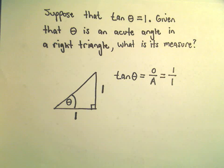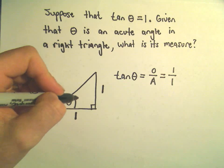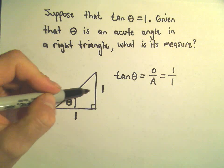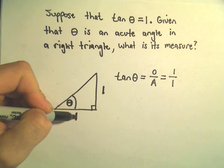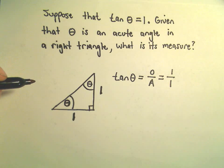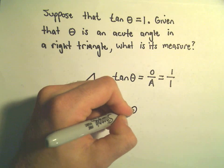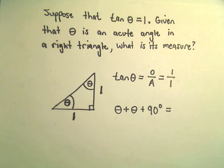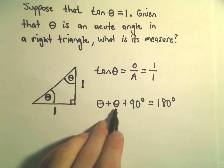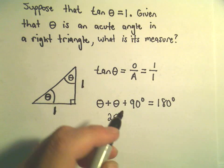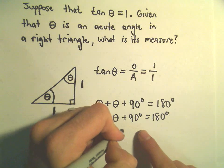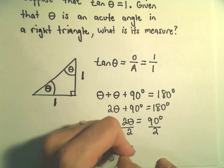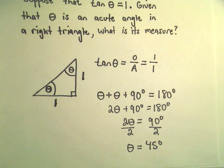At this point we actually have enough information already to figure out theta. If this is theta degrees, and opposite to theta the side has length 1, and this side also has length 1, that means this angle up here would also have to be equal to theta. So theta plus theta — we know the other angle by default has to equal 90 degrees, and all angles inside a triangle add up to 180 degrees. So one theta plus one theta gives us two theta; subtracting 90 degrees from both sides gives two theta equals 90 degrees, and dividing both sides by two gives theta equals 45 degrees.